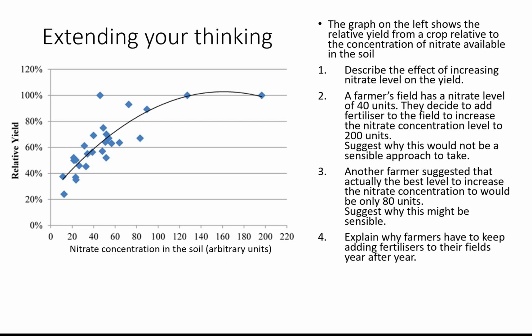Why do farmers have to keep adding fertilisers year after year? Every year they harvest the crop and take it off the field. All the mineral ions — nitrates and other ions — that were absorbed from the soil are locked up in the compounds of that crop, so when it's taken away those minerals are not returned to the soil by the plant decomposing. The farmer must keep adding mineral ions, either through artificial fertilisers, manure, or even planting certain plants with nitrogen-fixing bacteria in their roots that take nitrogen from the air.